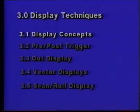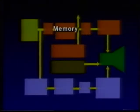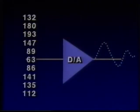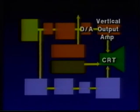After a waveform has been digitized and stored in oscilloscope memory, there are several different methods for reconstructing the waveform on the display. All methods require a digital-to-analog converter to change the digital data back into the familiar analog form. The main job of the D-to-A converter is to change numerical information into an analog voltage, which in turn drives the display circuitry.